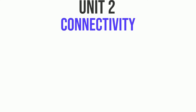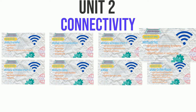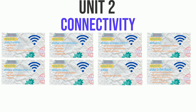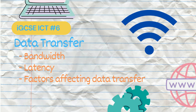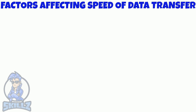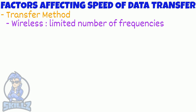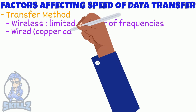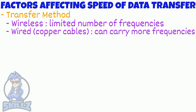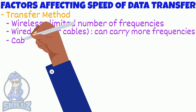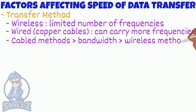Moving on to Unit 2 Connectivity, we have 8 videos — definitely harder than Unit 1. We got requests for factors that affect data transfer. The first factor is transfer method: wireless methods work on a limited number of frequencies, while copper cables can carry more frequencies. So cable methods have more bandwidth than wireless methods.